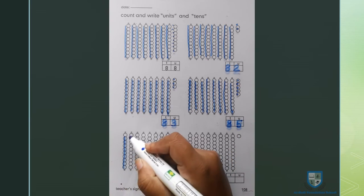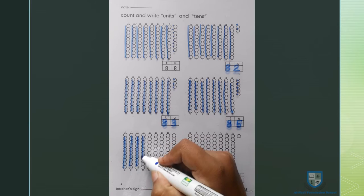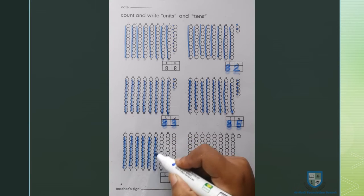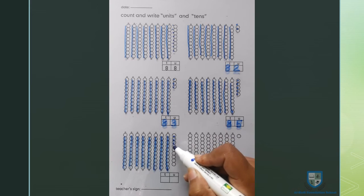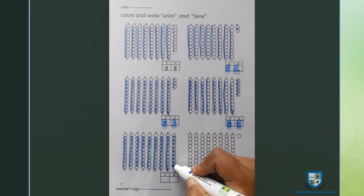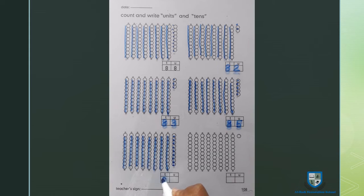Next. 10, 20, 30, 40, 50, 60, 70, 80, 1, 2, 3, 4, 5, 6, 7, 8, 9. 8 tens, 9 units. 89.